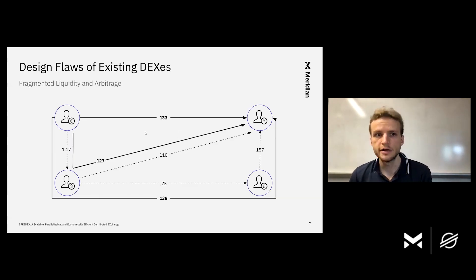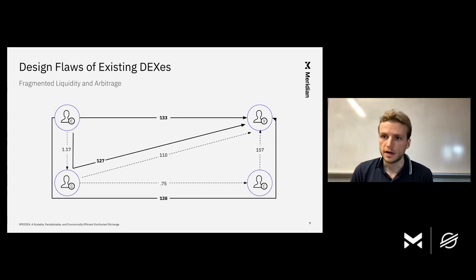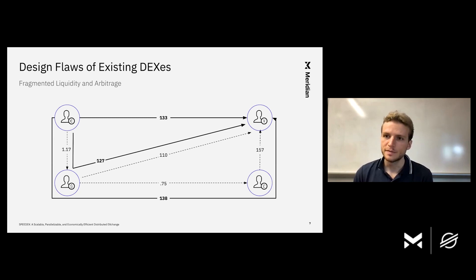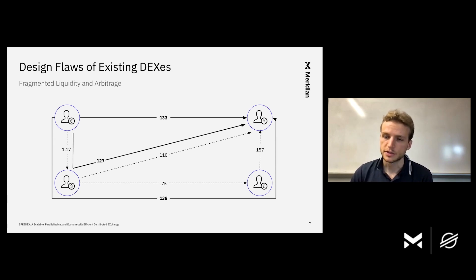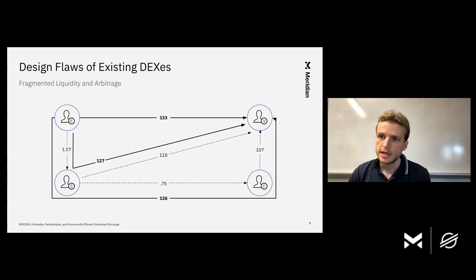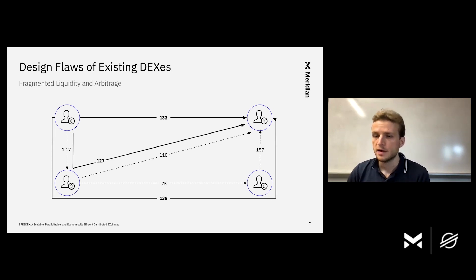Unfortunately, existing DEXes do not meet these criteria. Any kind of on-chain DEX that we see today fragments liquidity between asset pairs. This means that in order to get the best exchange rate from one asset to another, I have to explore a complicated set of paths to make a trade from one asset to another, and each path is going to get me a different exchange rate. And after I make a trade, I introduce an arbitrage opportunity between the path that I chose and every other path from what I sold to what I bought.